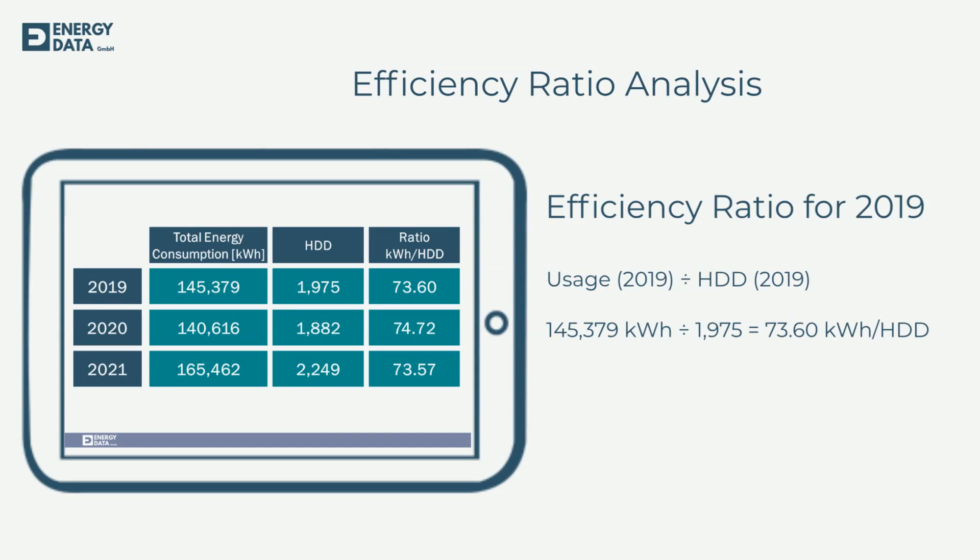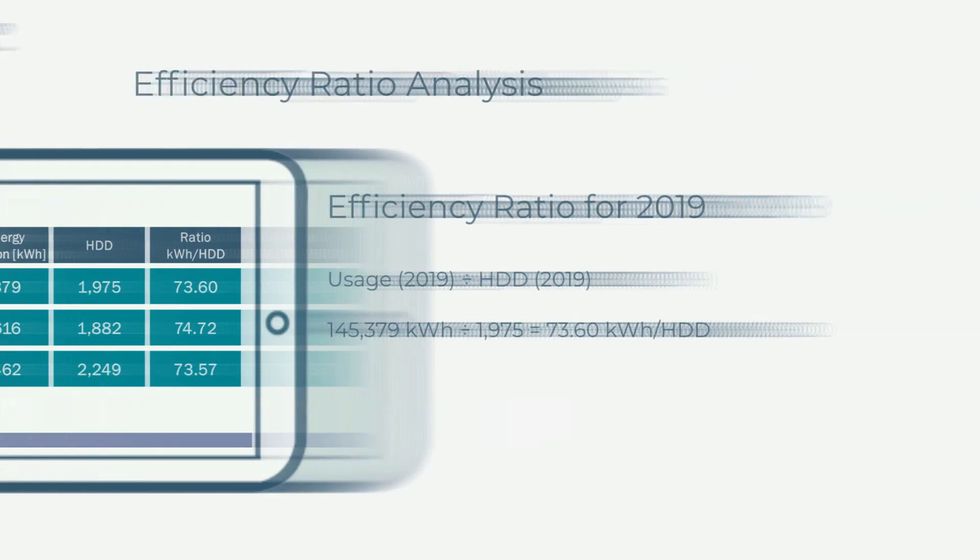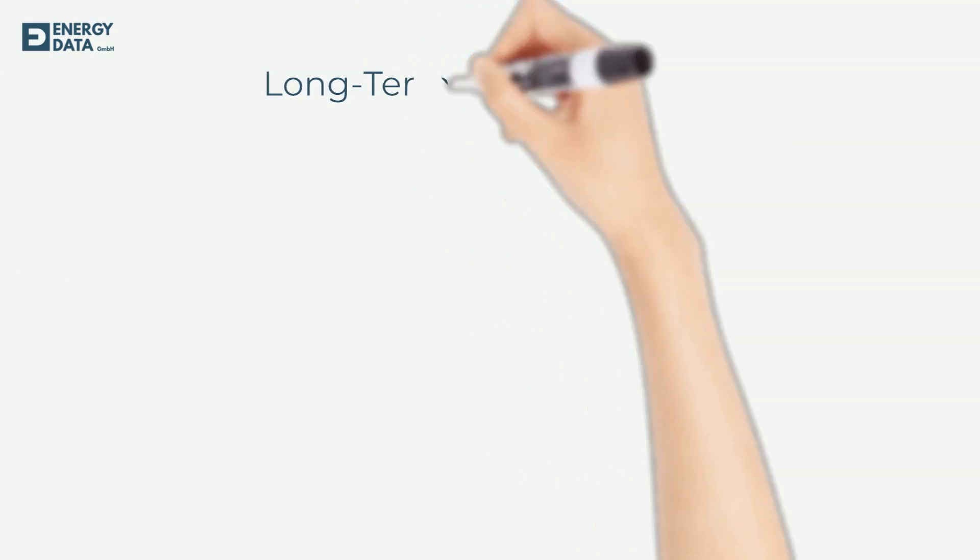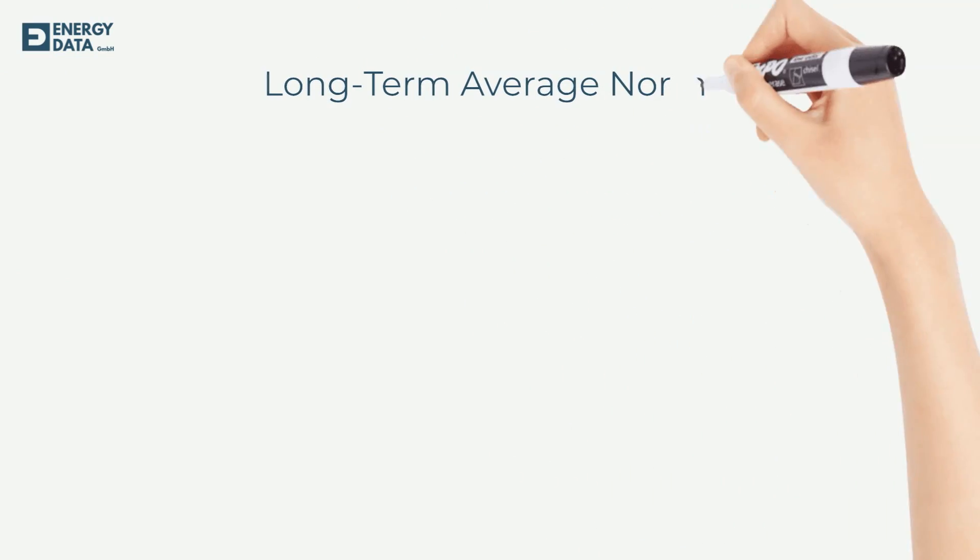If you now compare the efficiency ratios you will notice that 2020 was efficiency-wise the worst year and should be analyzed more in detail. Although this method is easy and fast to implement, these ratios are not as easy to grasp as kilowatt hours. So let's correct the actual energy usage in kilowatt hours.